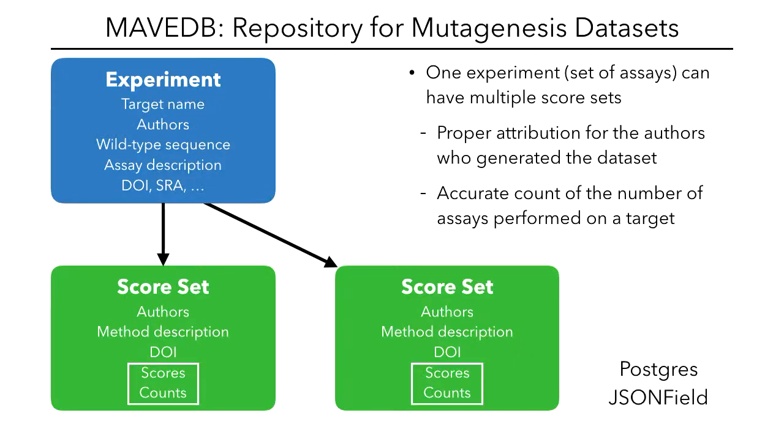It's set up with this relationship. We have experiments which have the name of the target, author, wild type sequence, how the assay was done, any links out to the literature or other databases. Then we have a score set with authors, description of the method for how scores were calculated. This is the scores, the experiment is the raw data. But this is actually a one-to-many relationship, which means that if you come along with a new scoring method and analyze some existing data set, it can be tightly coupled to the original data set so the people that did the wet lab work can get proper credit. We also don't have some weird double counting problem where you think a benchmark data set has been performed 30 times when really it's just the one that everybody reanalyzes. This was all possible because we use JSON fields in Postgres, so we can be really flexible in terms of what columns we can include.